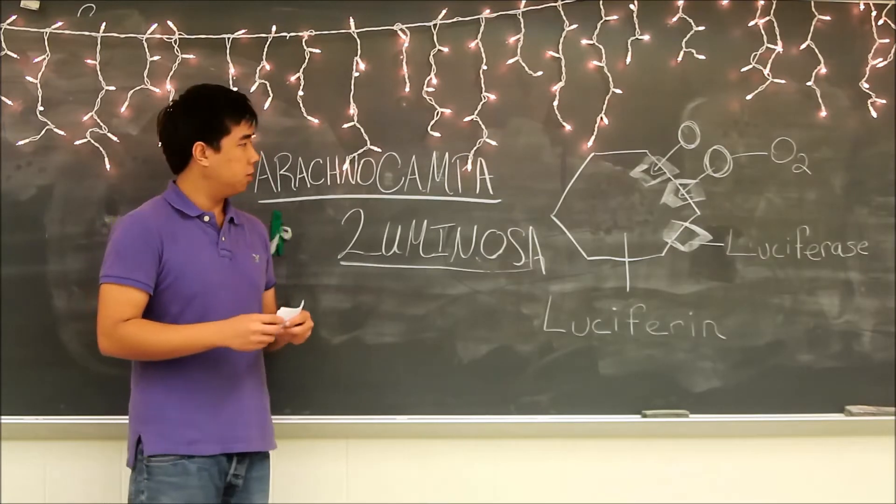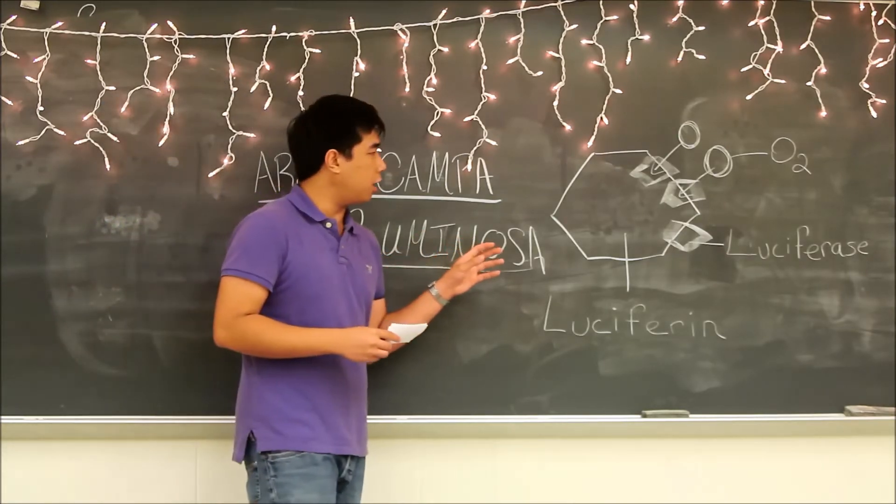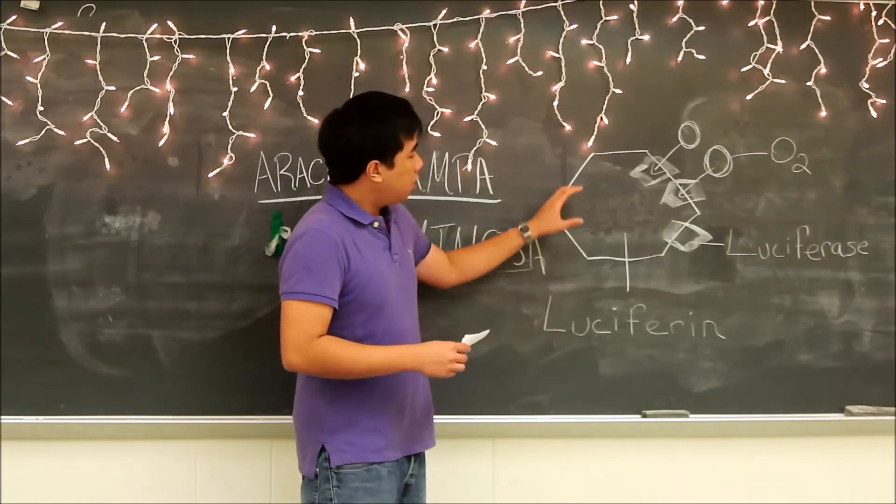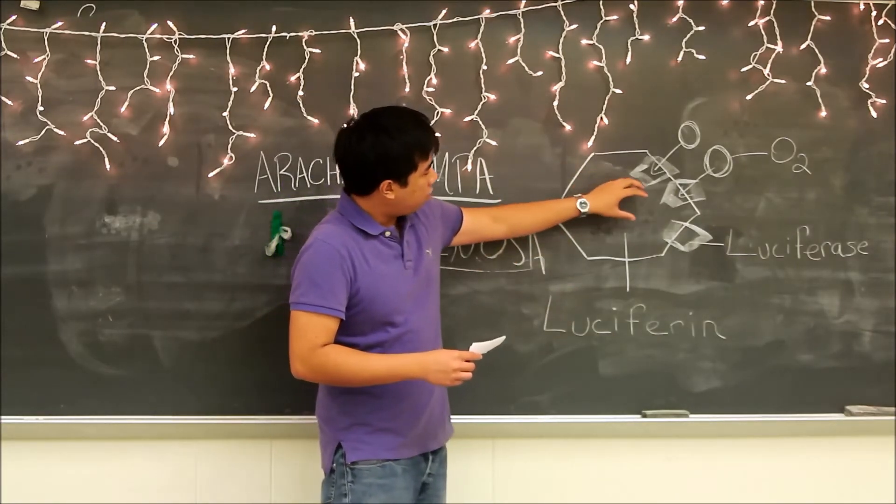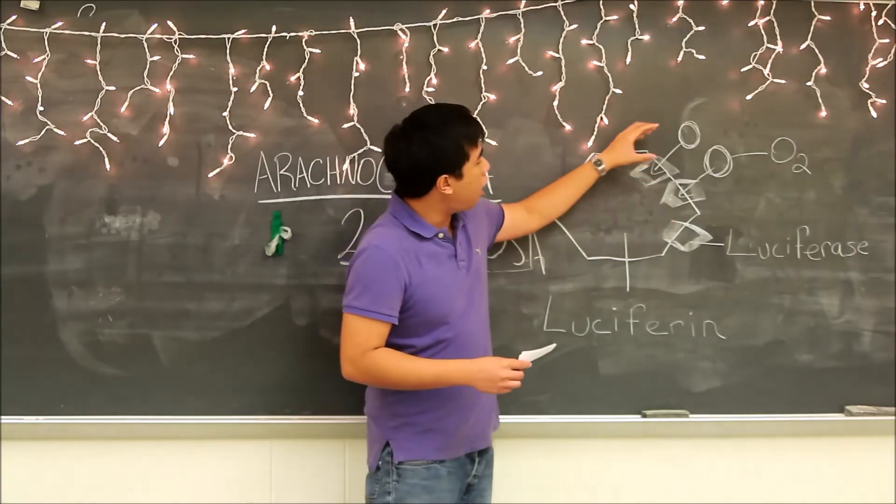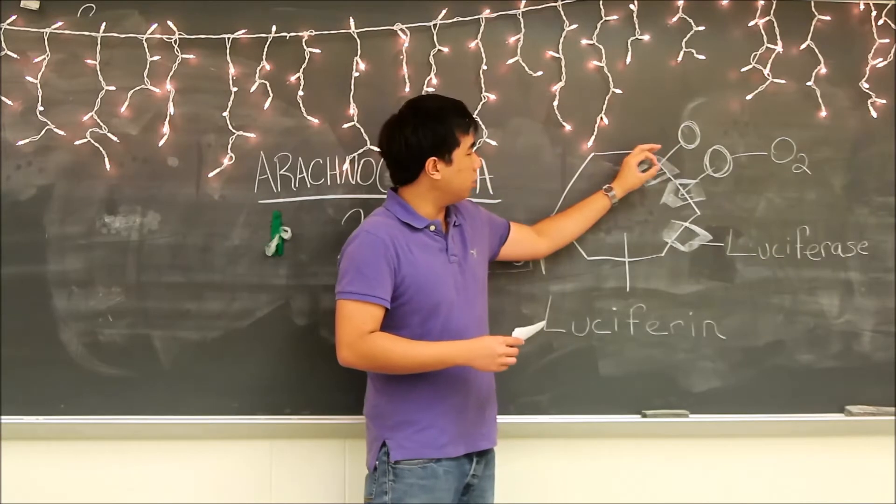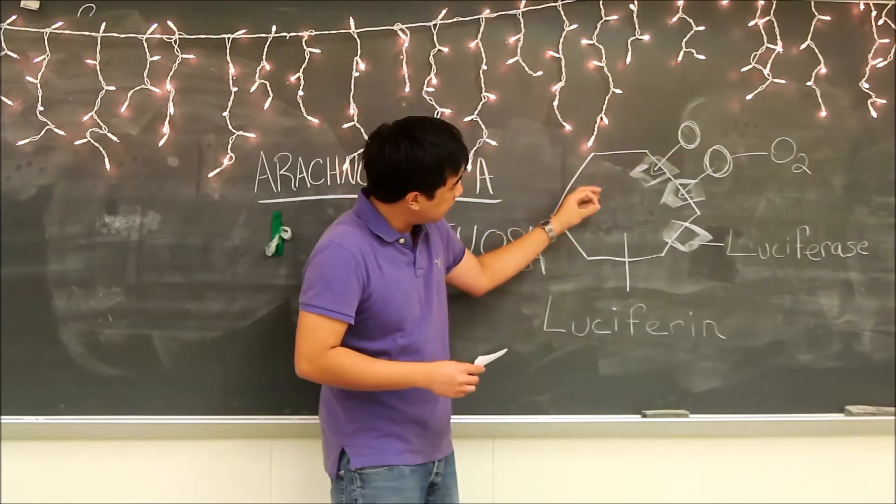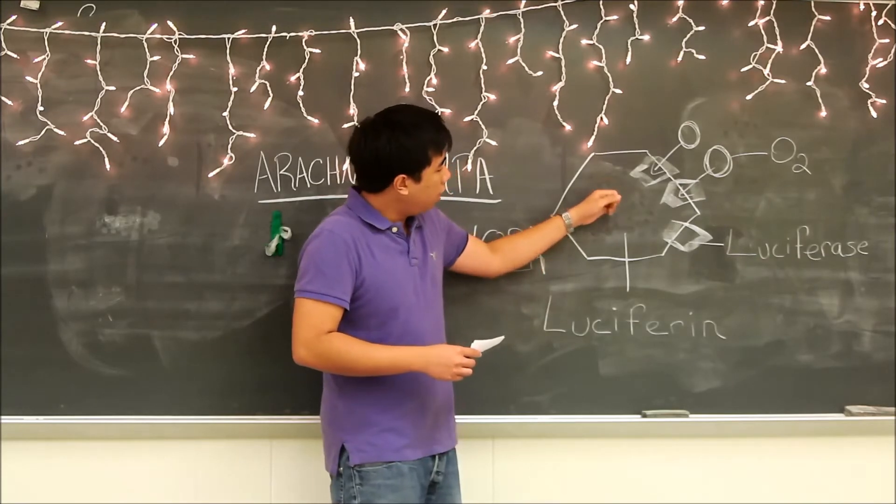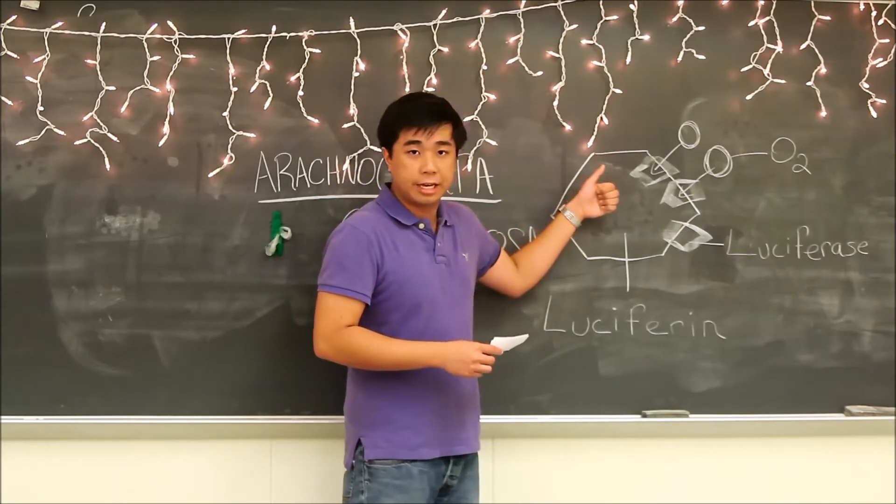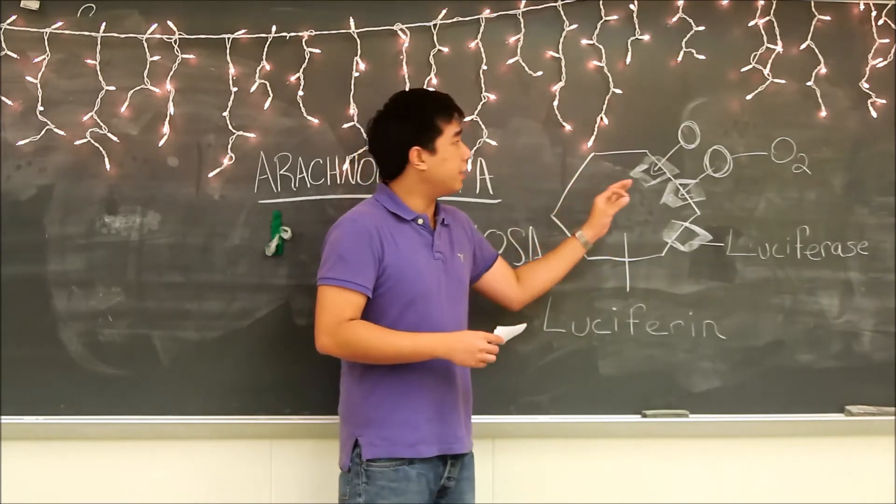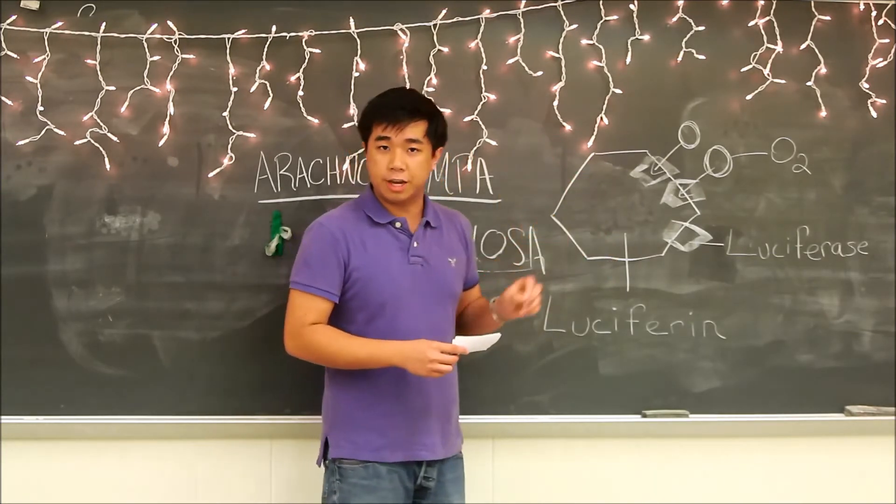It's a combination of a couple of substances, the first being luciferin. Luciferin reacts with luciferase, its enzyme, and allows oxygen, diatomic oxygen molecules, to come in and excite the electrons in the luciferin. Once it reaches that excited stage, it drops back down to its ground stage. That drop creates the light that you see from their tails.